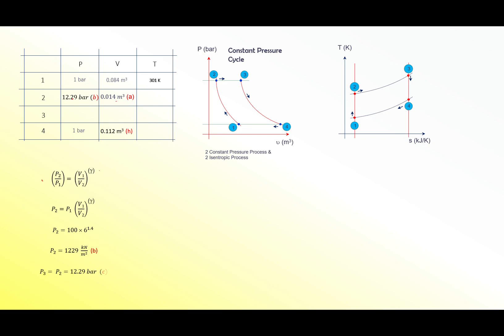Since P2 and P3 are at constant pressure, P3 is also 12.29 bar. The next step is to find temperature T2. Using the isentropic compression from 0.1 to 2 based on the temperature-to-volume relationship — previously we used pressure to volume, now we use temperature to volume — we get T2 equals 616 Kelvin. Put 616 Kelvin into the table.